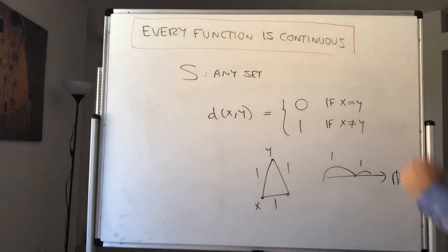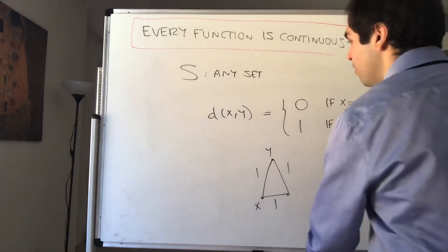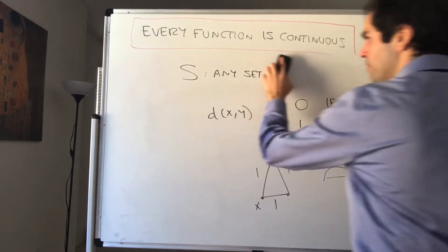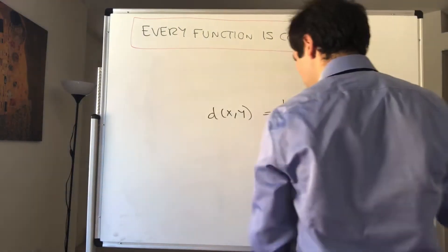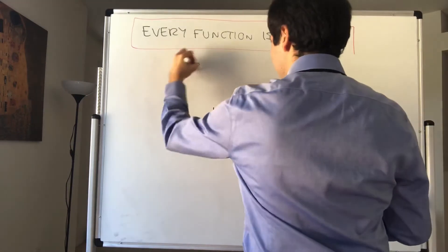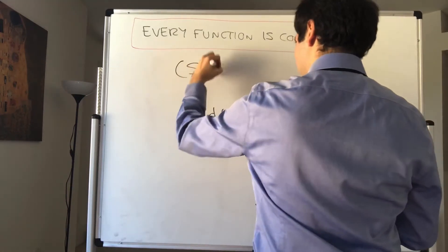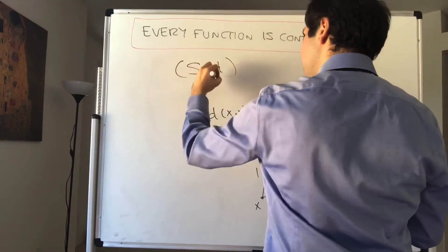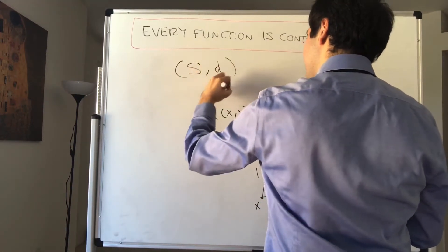It's super interesting because you do it with any set. Even in the real numbers you just say that points are exactly one apart — the distance is one everywhere. Here's what I want to show: consider (S, d) where d is the discrete metric.